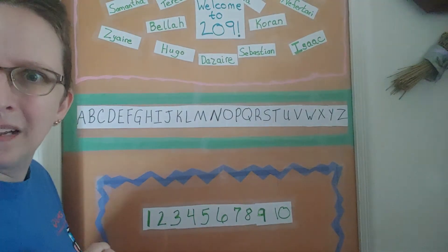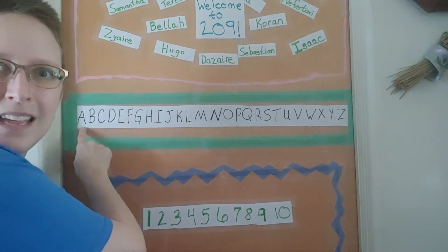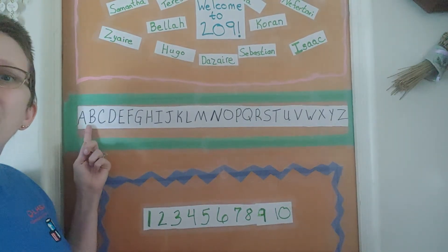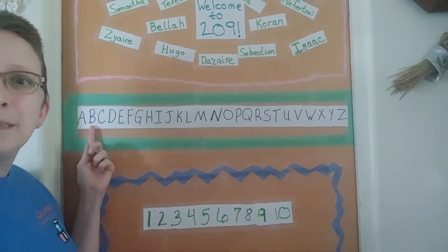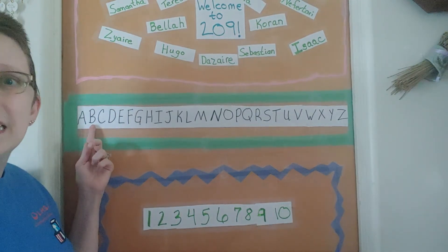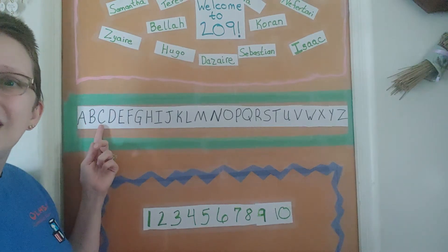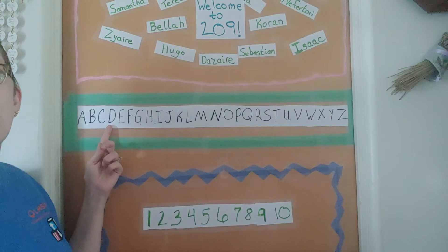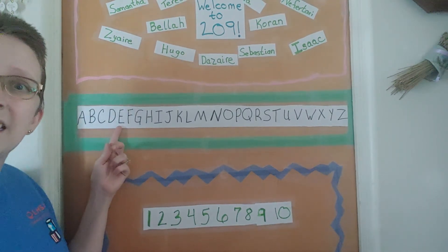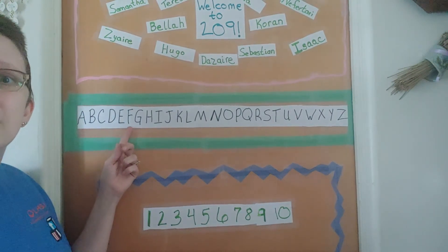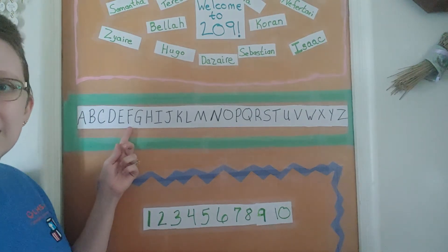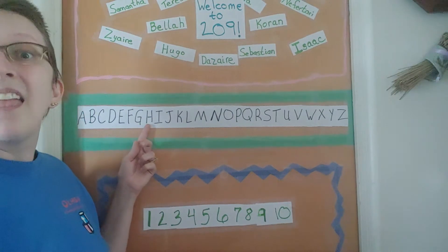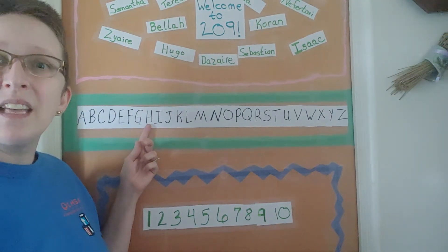Let's take a look at our alphabet now. We'll sing the whole song. The A says 'eh,' every letter makes a sound, the A says 'eh.' The B says 'buh,' every letter makes a sound, the B says 'buh.' The C says 'kuh,' every letter makes a sound, the C says 'kuh.' The D says 'duh,' every letter makes a sound, the D says 'duh.' The E says 'eh,' every letter makes a sound, the E says 'eh.' The F says 'fff,' every letter makes a sound, the F says 'fff.' The G says 'guh,' every letter makes a sound, the G says 'guh.' The H says 'huh,' every letter makes a sound, the H says 'huh.'